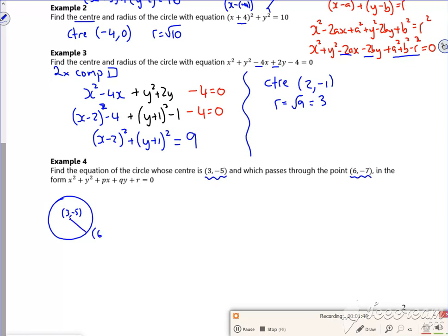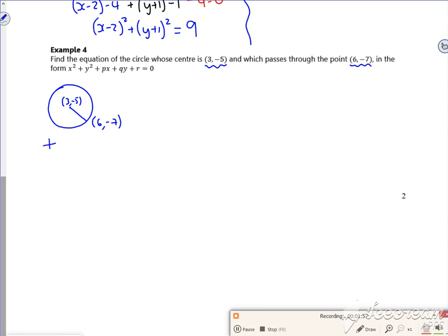So I've got the centre of it, so I'm happy with that. I know it would be x minus 3 all squared and y plus 5 all squared. What I haven't got is the radius, so I need the radius, so I'm going to use Pythagoras for that.